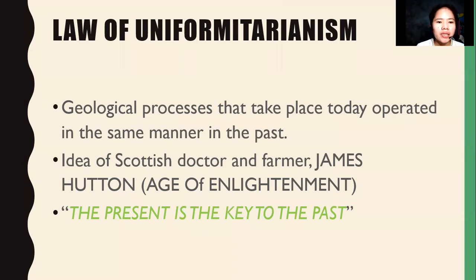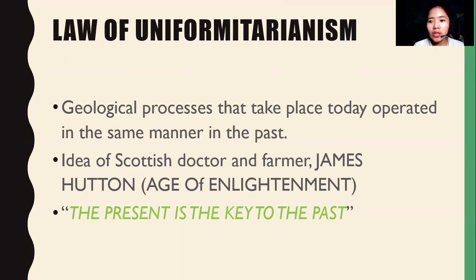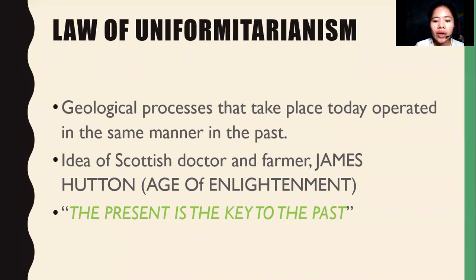The law of uniformitarianism states that geological processes that take place today operated in the same manner in the past — as they say, the present is the key to the past. What we discover today helps us understand our ancestors. It is the idea of James Hutton, who described this as the age of enlightenment — for us to understand the existence of the past.